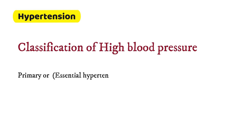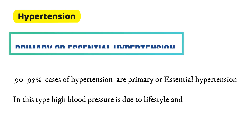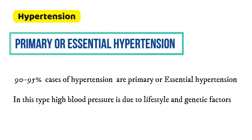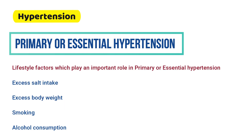High blood pressure is classified as primary, also called essential hypertension, and secondary hypertension. About 90 to 95 percent of cases are primary, in which high blood pressure is due to lifestyle and genetic factors. Lifestyle factors include excess salt intake, excess body weight, smoking, and alcohol consumption.